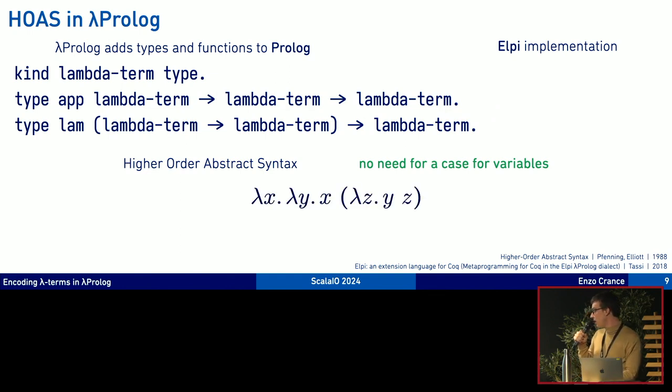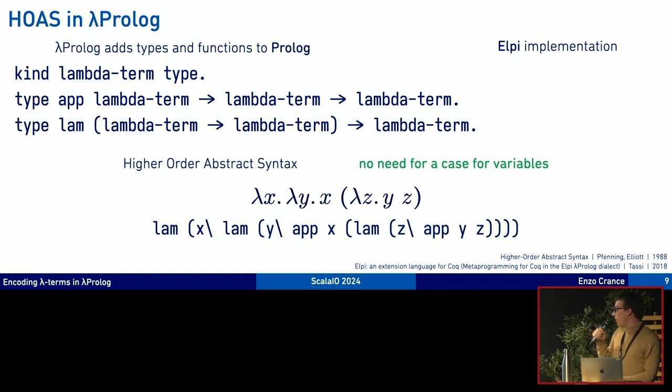Let's see an example. Lambda X lambda Y, X applied to lambda Z, Y applied to Z. This is encoded as the following term in lambda prolog. We have a lambda, a lamb constructor every time there's a lambda. But after the lambda constructor the argument is a function. The backslash here is a function in lambda prolog. Here X is just a variable in the meta language directly. We don't have a var case in our type encoding for lambda terms. And it allows things to be always well scoped. We cannot add another non-existent variable here. It must refer to something defined before.